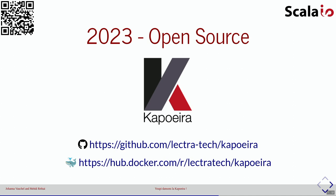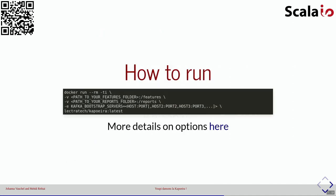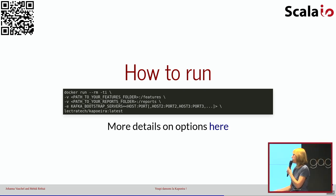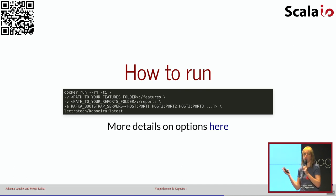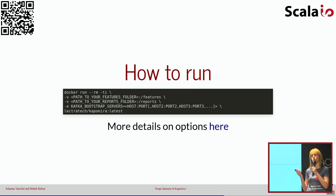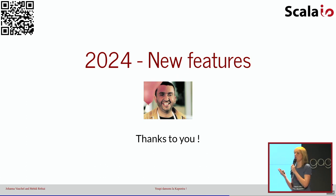En 2023, on est très heureux de proposer cet outil à toute la communauté open source. Je remercie mon équipe et tous les contributeurs qui ont permis de faire Capoeira ce qu'il est aujourd'hui. Les sources de Capoeira sont disponibles sur GitHub et l'image Docker est aussi disponible. Si vous voulez utiliser Capoeira, vous avez simplement à taper un petit Docker Run en précisant l'image Capoeira et quelques paramètres, comme où se trouvent vos fichiers features et où vous voulez retrouver le rapport. Michelin a déjà utilisé Capoeira et nous a fait de nombreux retours. On espère recruter des contributeurs pour nous aider à améliorer cet outil.